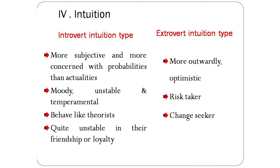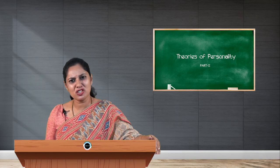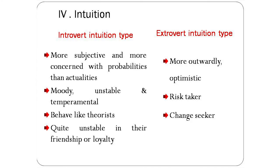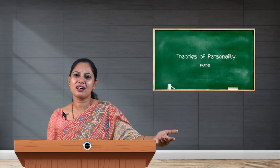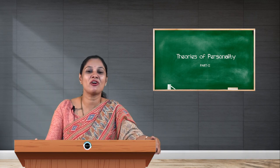The fourth psychological factor of Carl Jung is intuition type, divided into introvert intuition type and extrovert intuition type. Introvert intuition type people are more subjective and more concerned with probabilities than actualities — they don't want facts; they worry about probable acts. These people are very moody and most of the time unstable and very temperamental — you cannot gauge them. Sometimes they are happy, sometimes gloomy and sad, sometimes easily angered. They behave like theorists or philosophers rather than talking about reality, and they are quite unstable in friendship; you cannot trust them as they never express their emotions.